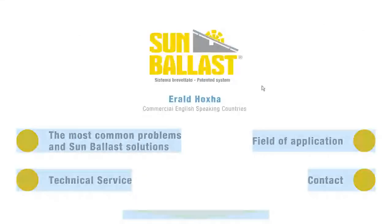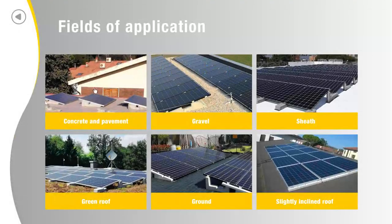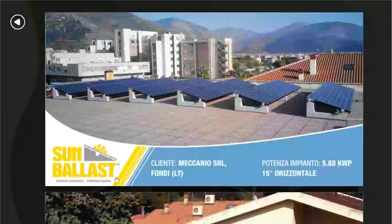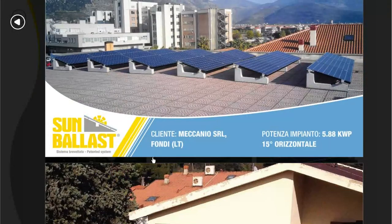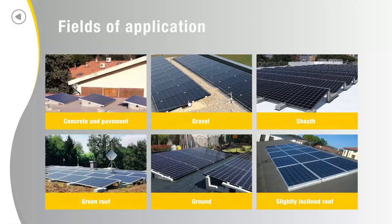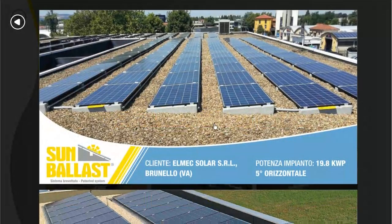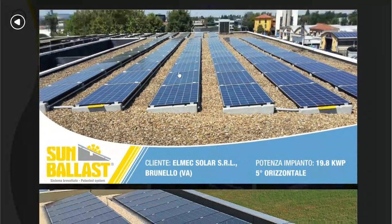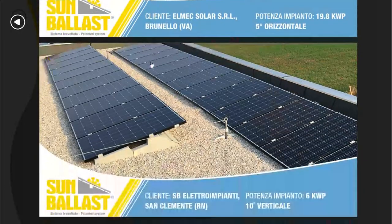Another topic I would like to cover is the field of application. Our products can be used on concrete and pavement, on gravel, on sheath, on green roofs, and on ground and slightly inclined roofs. Here we have an installation of 15 degrees horizontal on concrete. On gravel, we have a 5-degree horizontal installation. Below, there is a 10-degree vertical installation.